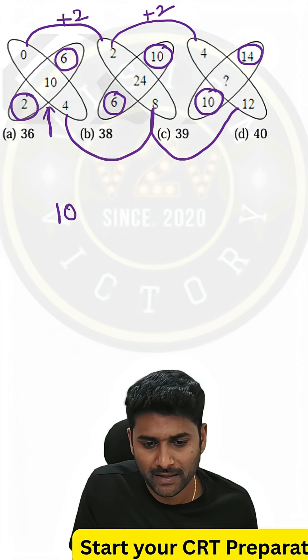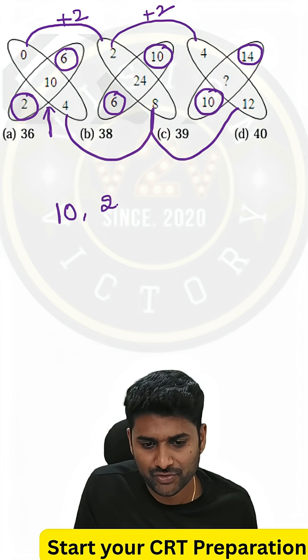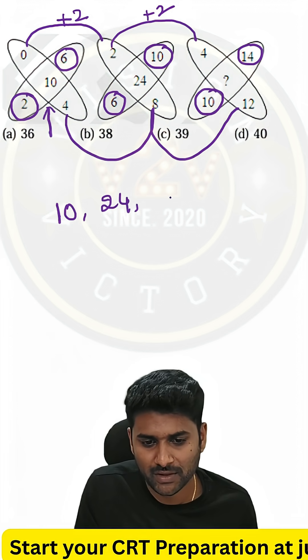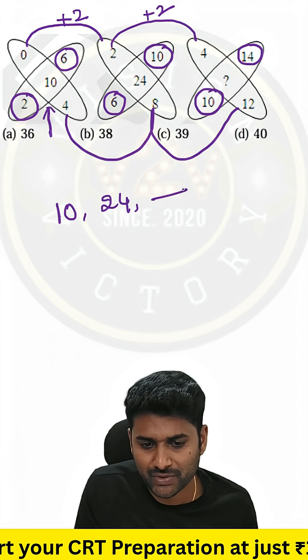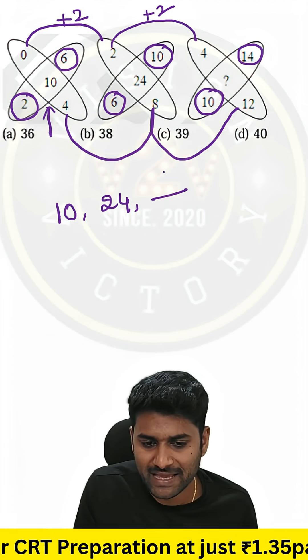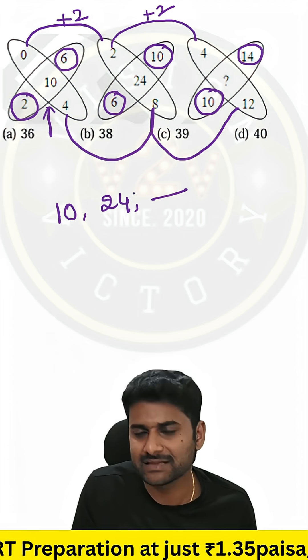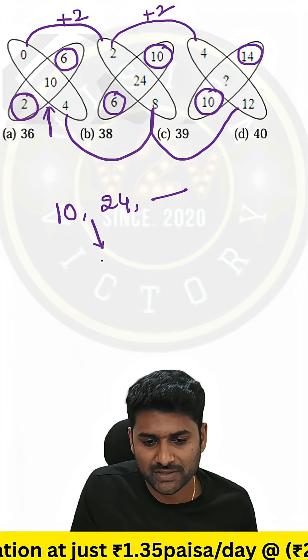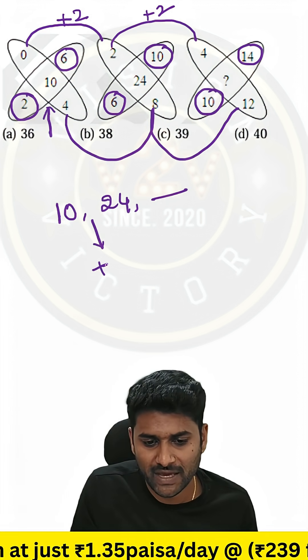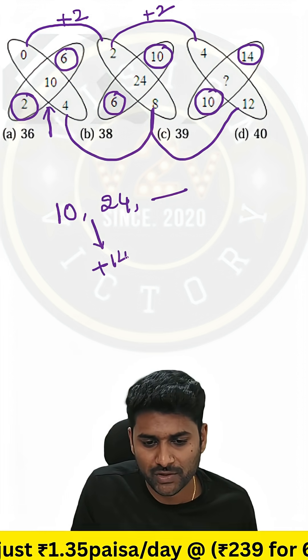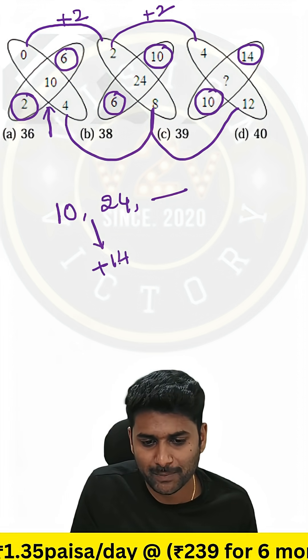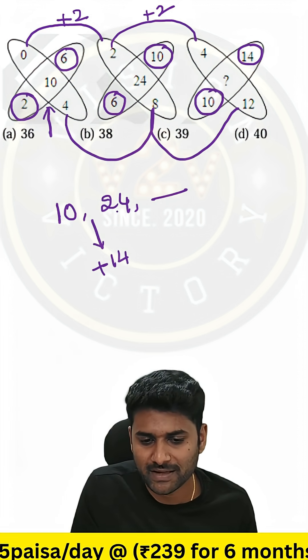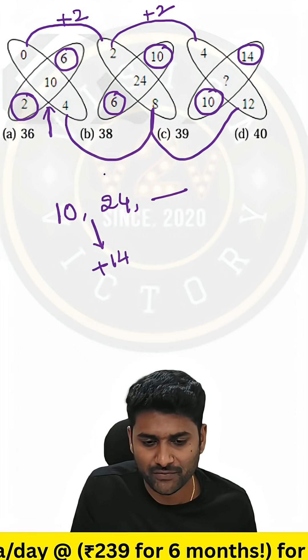Finally, 10 and 24 — we should replace one exact answer in the question mark. Now observe that we are adding 14 units: 10 plus 14, the resultant is 24.